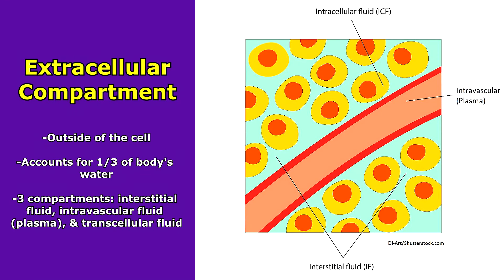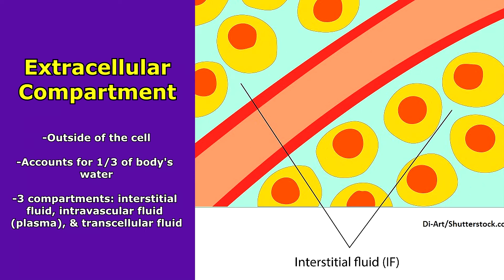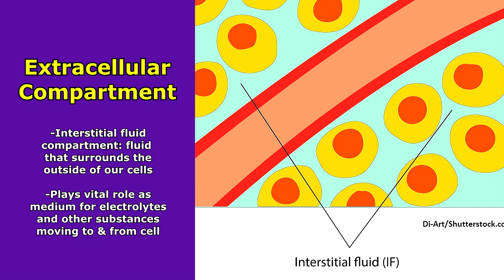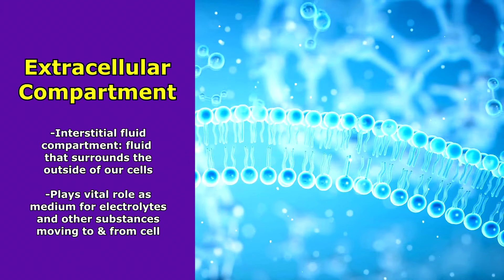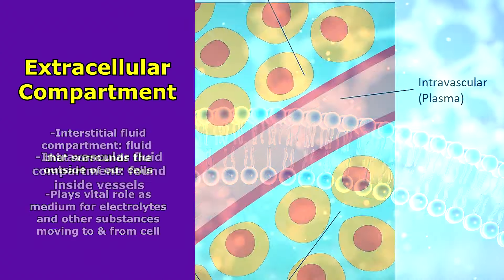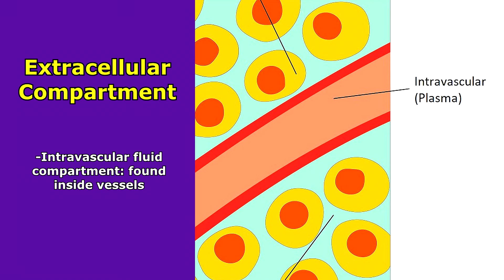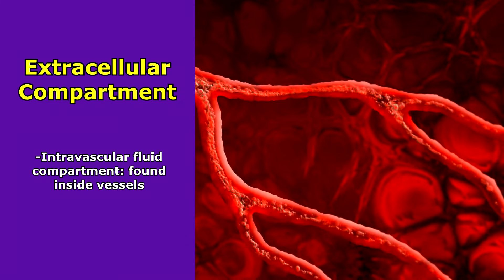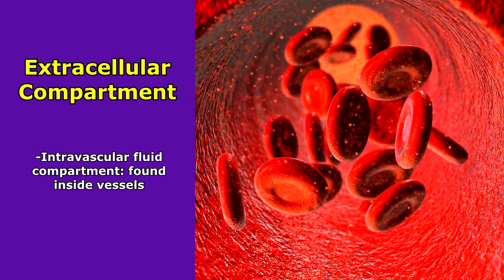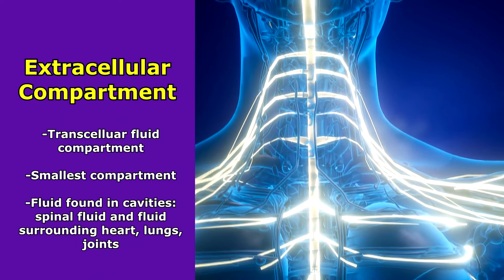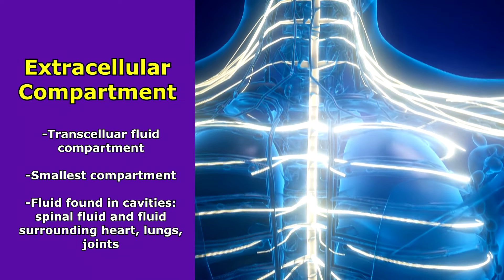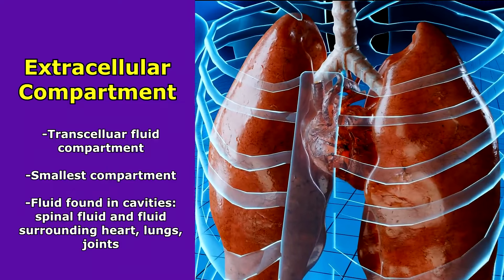Then there's the extracellular space, which is the fluid outside of the cell, accounting for one third of our body water. It includes the interstitial fluid compartment — the fluid surrounding the outside of our cells — which plays a vital role as a medium for electrolytes and other substances to move to and from the cell to the plasma via the capillaries. The intravascular fluid compartment, also known as plasma, is found inside the blood vessels and contains important substances like electrolytes and blood cells. Lastly, the transcellular fluid compartment is the smallest, found within certain body cavities like spinal fluid, the fluid surrounding our heart and lungs, and the joints.